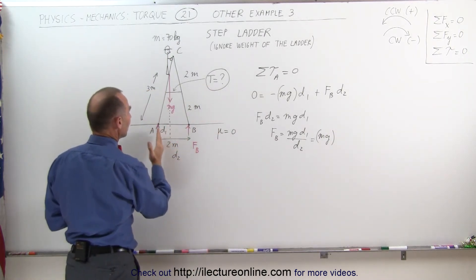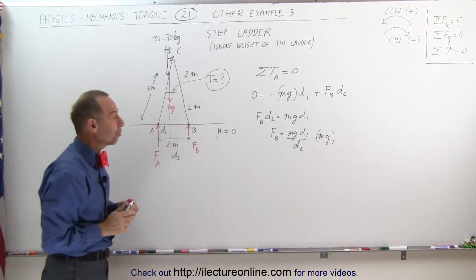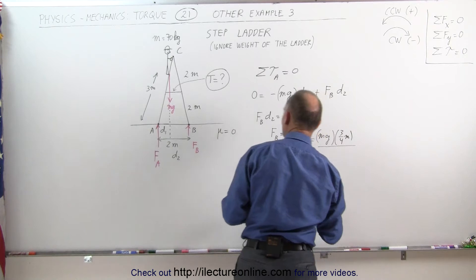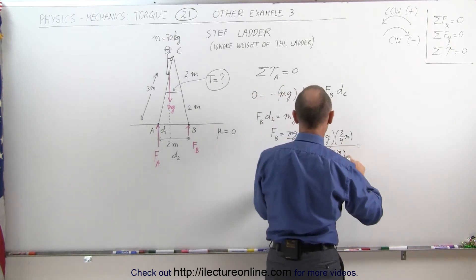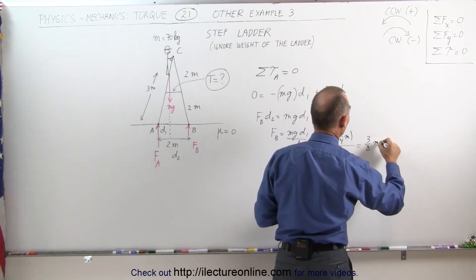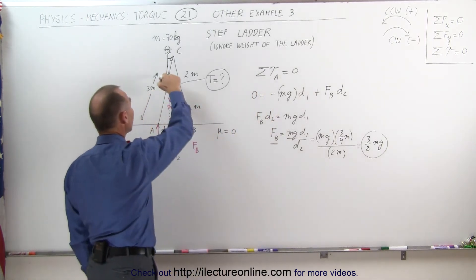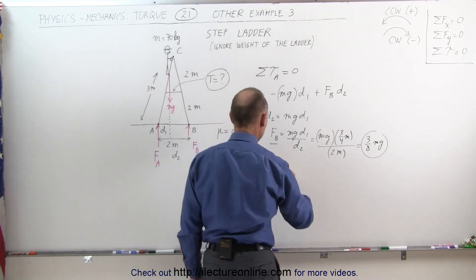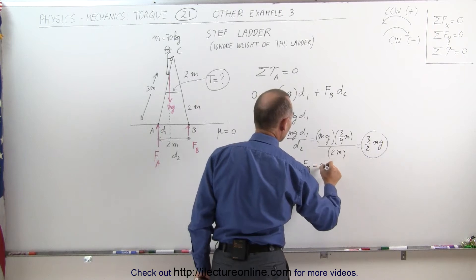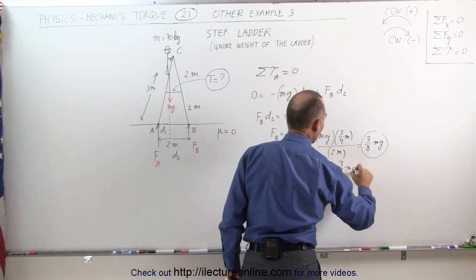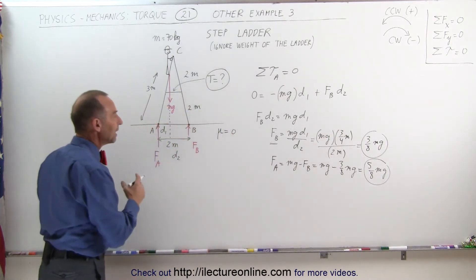The ladder is 2 meters tall, so the distance from the bottom to the halfway point is 1 meter. Since the person is three-quarters of the way up the ladder, D1 is three-quarters of a meter. D2 is the full 2 meters. The meters cancel out, giving us F_B equal to 3/8 the weight of the person. Since F_A plus F_B must equal the full weight of the person, F_A equals MG minus 3/8 MG, which equals 5/8 MG. So the force at A is 5/8 MG and the force at B is 3/8 MG.